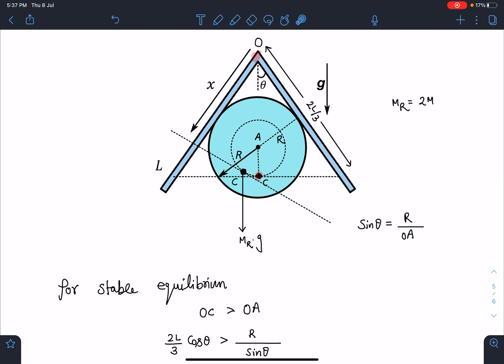So I can say OC should be greater than OA. OC value you can see here, this is 2L by 3 here, 2L by 3. So combined center of mass will be at the midpoint. So this distance is 2L by 3 and now 2L by 3, so OC will be 2L by 3 cos theta.